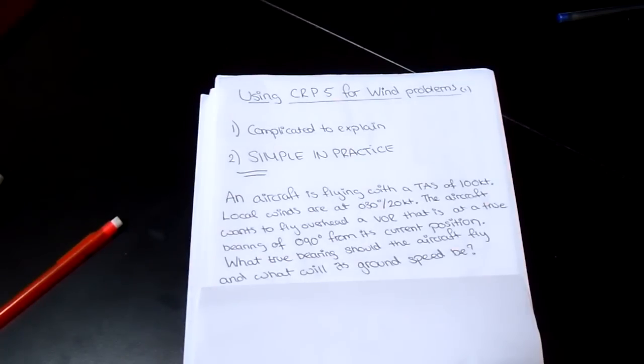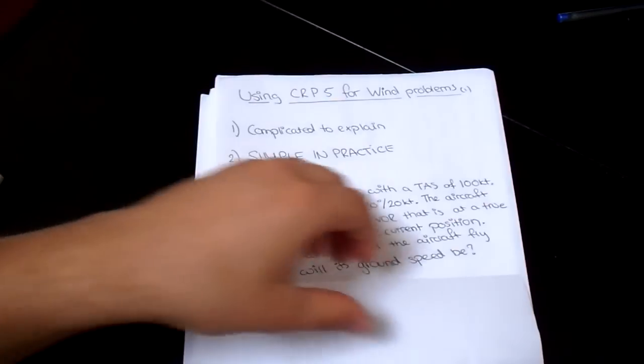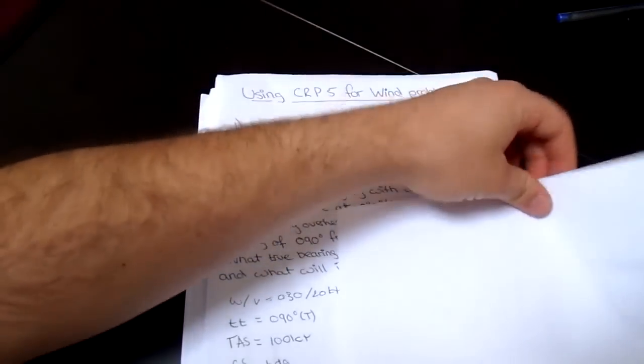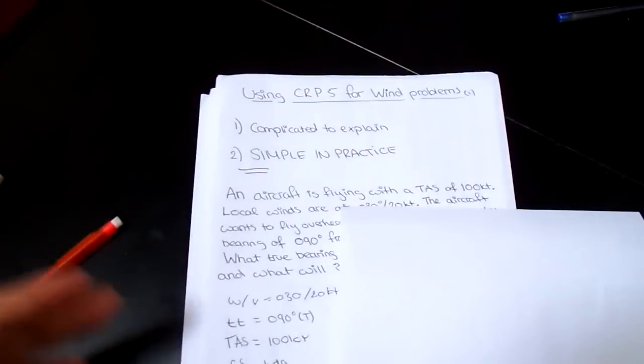Okay, so let's begin with the first question. An aircraft is flying with a TAS of 100 knots. Local winds are at 030 degrees 20 knots. The aircraft wants to overfly a VOR that is at a true bearing of 090 from its current position. What true bearing should the aircraft fly, and what will its ground speed be?